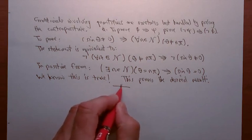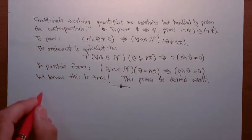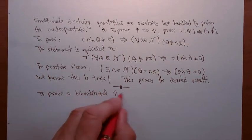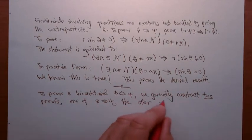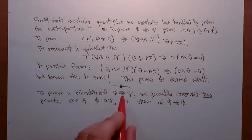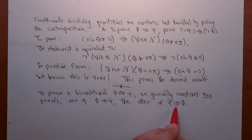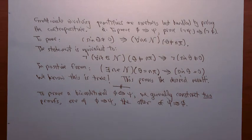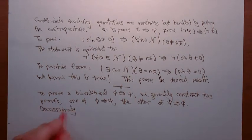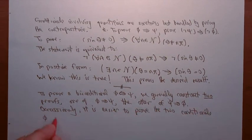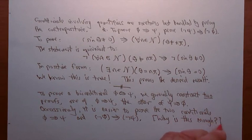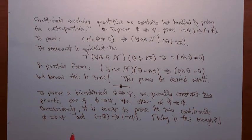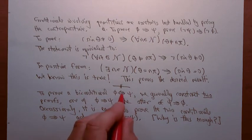To prove a biconditional φ ⟺ ψ, we generally construct two proofs: one of φ ⟹ ψ and the other of ψ ⟹ φ. Since the biconditional is just the conjunction of the two conditionals, that clearly amounts to a proof of the biconditional. Occasionally it's easier to prove φ ⟹ ψ and ¬φ ⟹ ¬ψ. I'll leave you to find out why this is enough — if you look back at the assignments, you should find a clue as to why it's sufficient to prove these two in order to prove the biconditional.